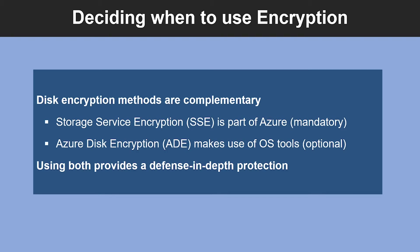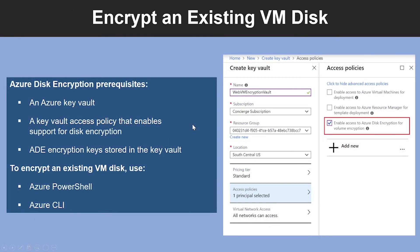An application may also automatically encrypt its own data. However, even with those protections, if someone were to gain access to the data disk and the disk was not encrypted, they might be able to exploit weaknesses in that application's data protection. With disk encryption in place, such exploits are not possible. Storage Service Encryption is part of Azure itself and there should not be any noticeable performance impact on the VM disk I/O when using SSE. ADE makes use of VM operating system tools like BitLocker and DM-Crypt, so the VM must do some work when encryption or decryption of the VM disk is being performed.